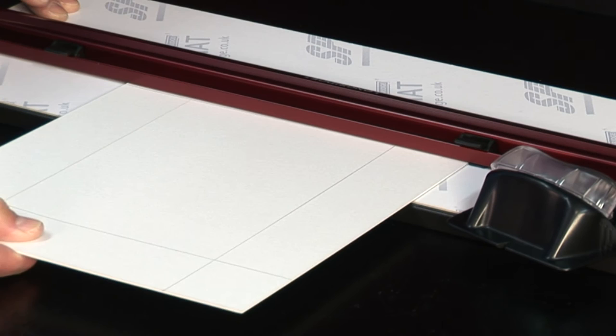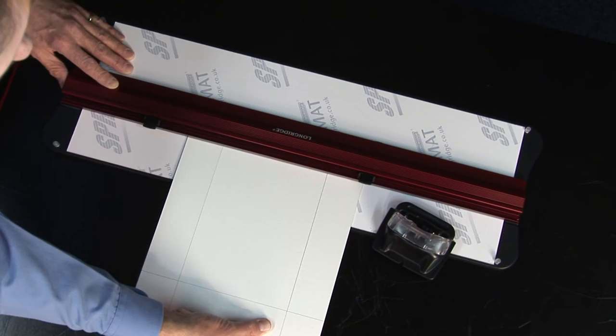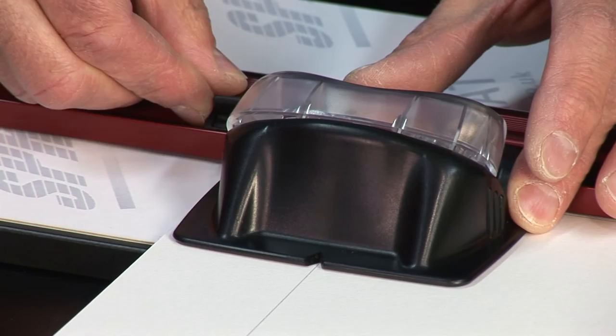Now we're going to do the short side of the mount. Just repeat the same thing. Push the mount down against the mount stop. Line up the pencil line with the side of the rail. Change this cutter stop, of course, because we're doing the short side of the mount.